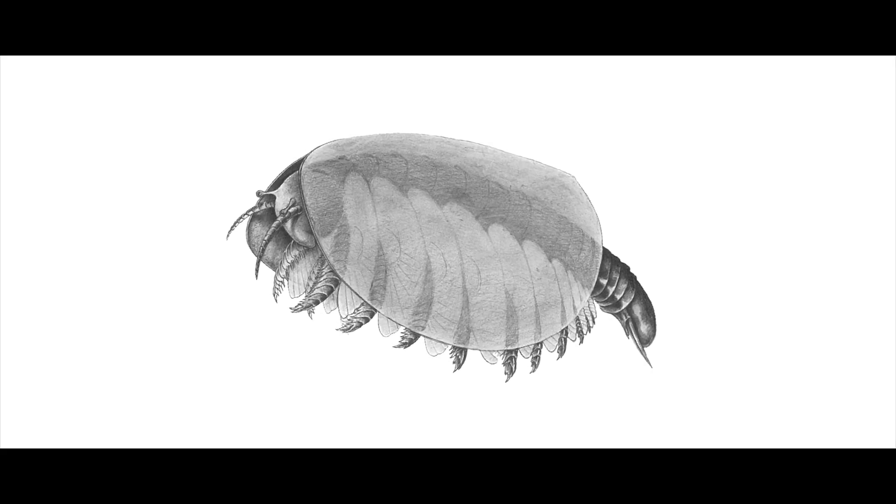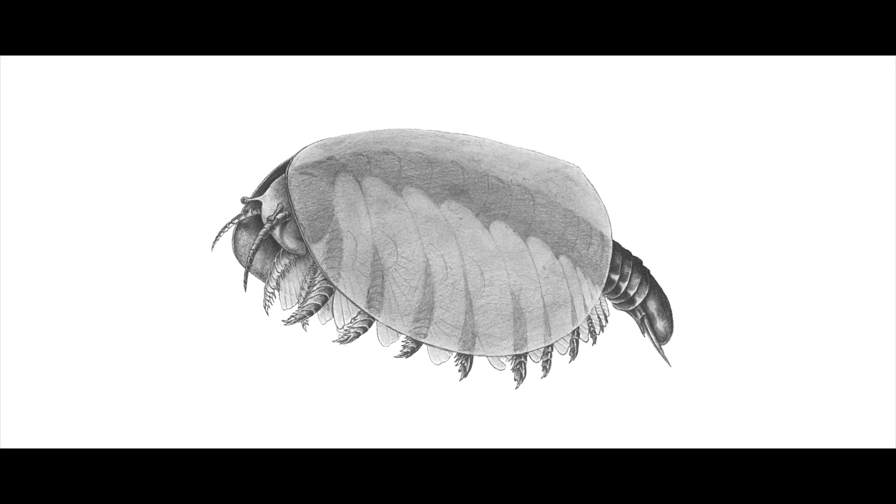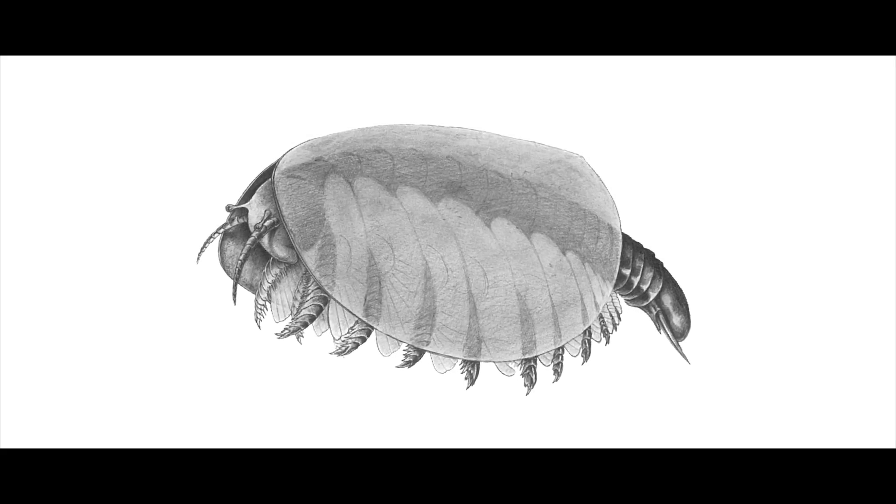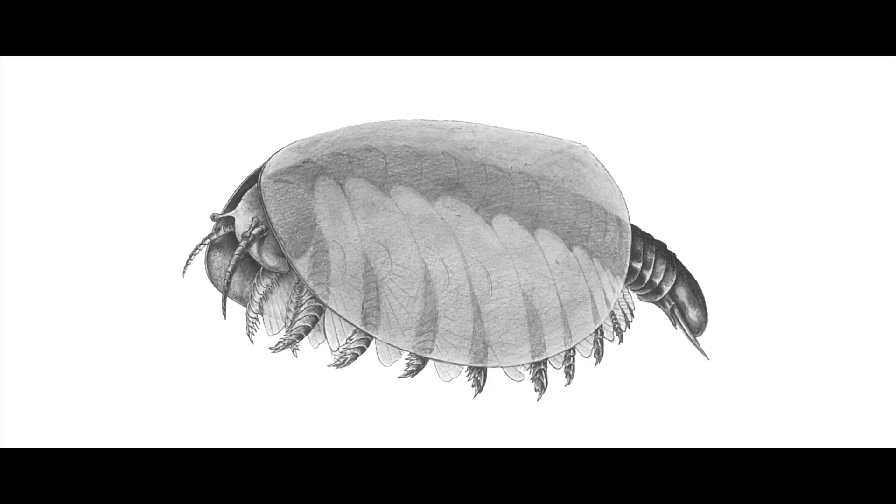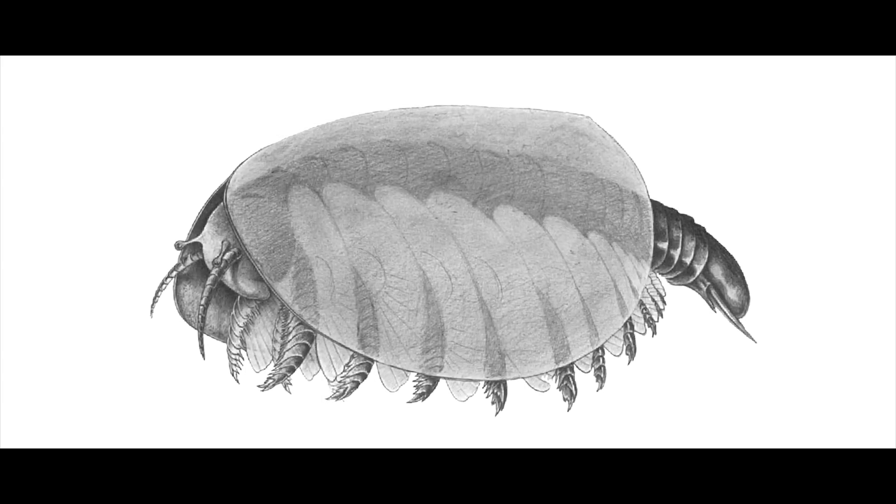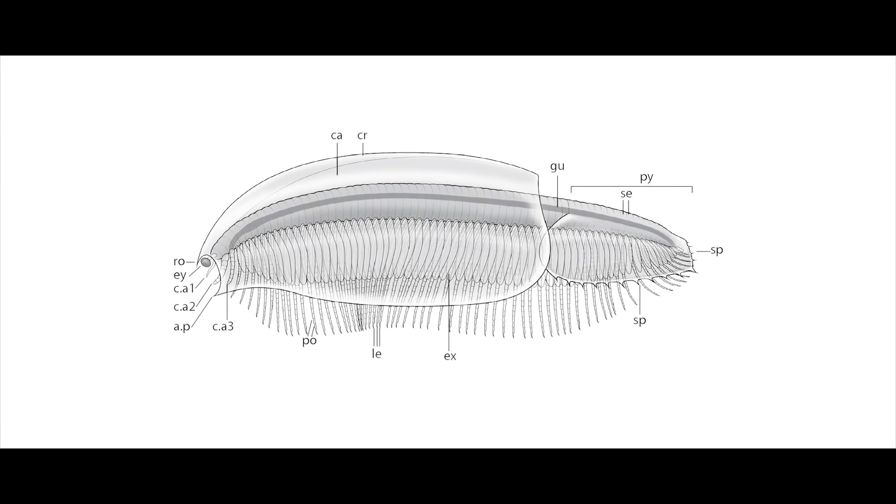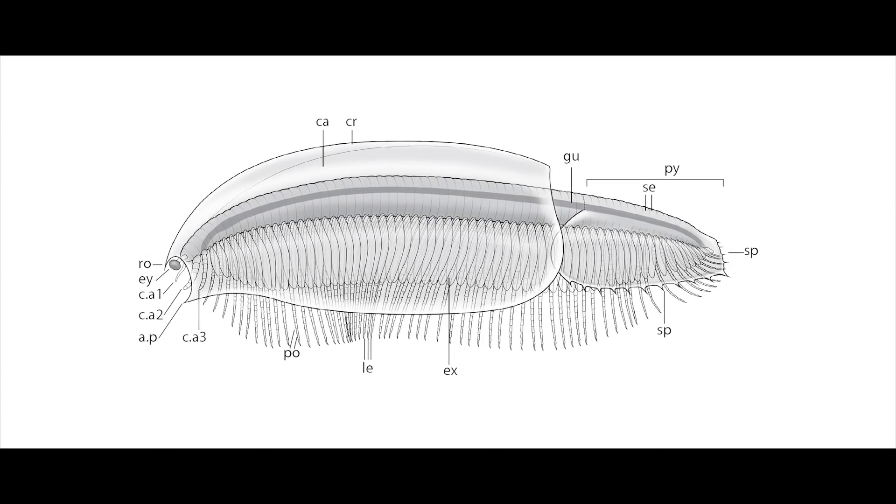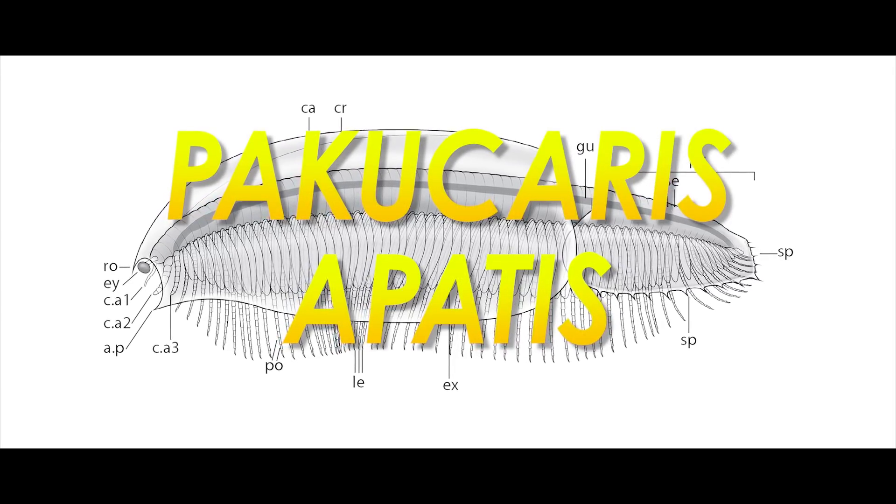Any new piece added to the knowledge of bivalved arthropods from half a billion years ago goes a long way to fleshing out the story of the arthropods and why these early forms took on the two-shelled approach to life. A brand new one was recently described as Pacucaris apetus, and it's just one more of these pieces.